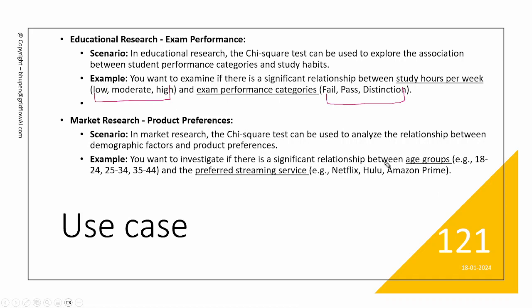One more example here. Let's say market research and you have age groups of buyers, 18 to 24, and so on and so forth. And you can call these age groups like ABC and is there any preference for streaming services like from Netflix. So depending on the age group, is there any evidence that certain age group prefers Netflix and certain other age group prefers Amazon Prime. So these are the objectives solved by chi-square tests.